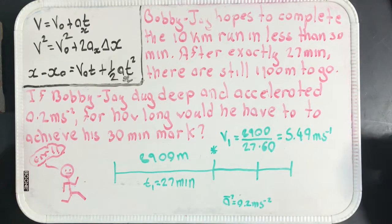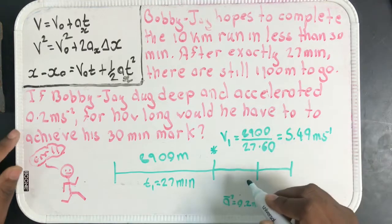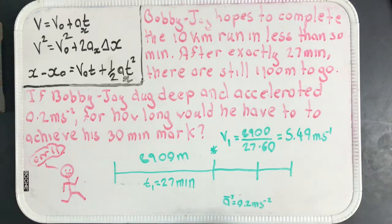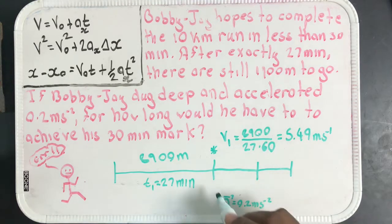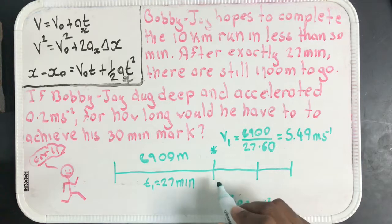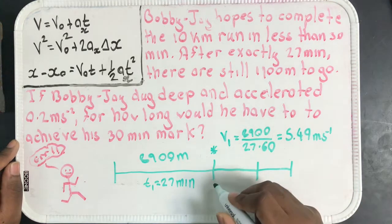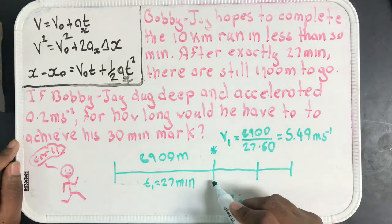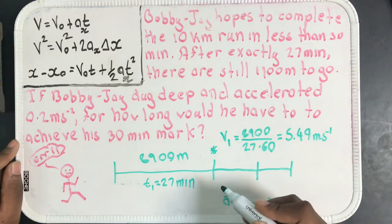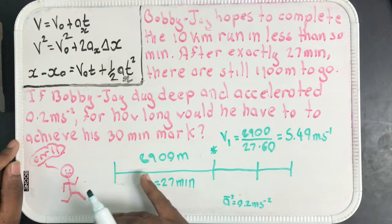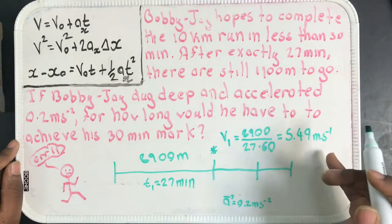He accelerates at 0.2 meters per second squared and we know some things about this journey. If he accelerates through this journey, his final velocity won't be the same as the velocity that he started this acceleration at. His initial velocity here would be the exact same as his average velocity because bear in mind he's maintaining this 5.49 meters per second.